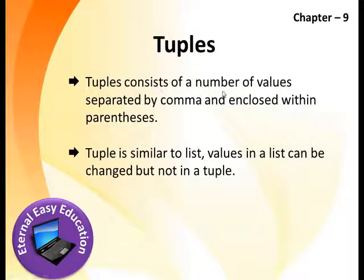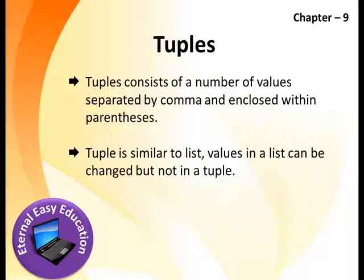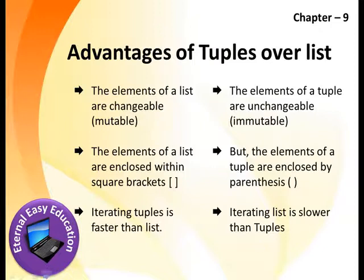Tuples consist of a number of values separated by comma and enclosed within parentheses. A tuple is similar to a list, but values in a list can be changed while values in a tuple cannot. Two key differences: tuple is enclosed within parentheses where a list is enclosed within square brackets, and values in a list can be changed but not in a tuple.